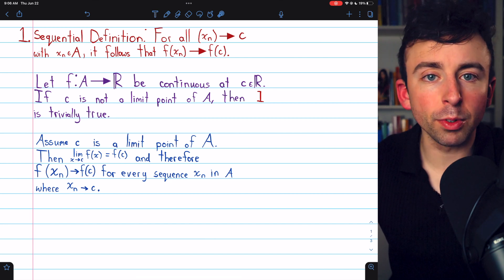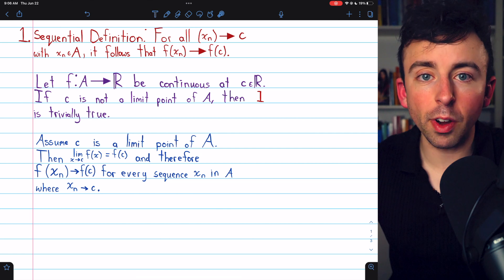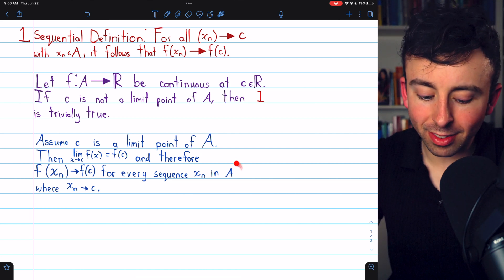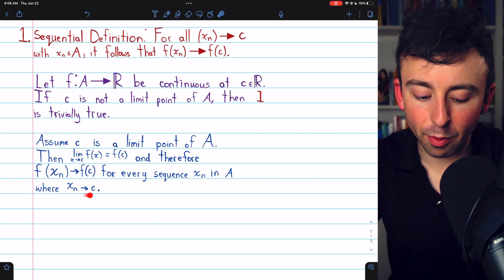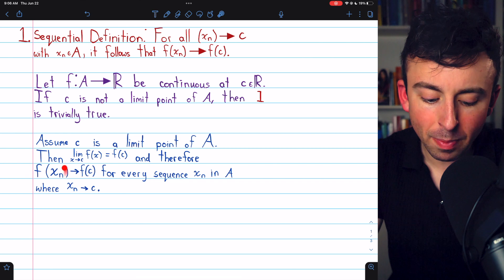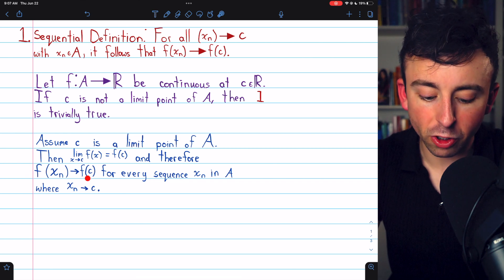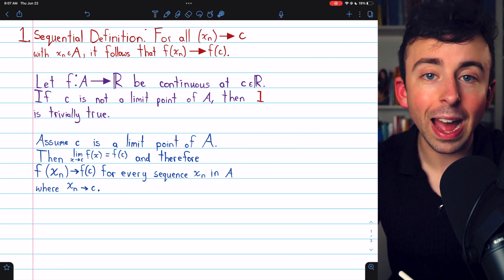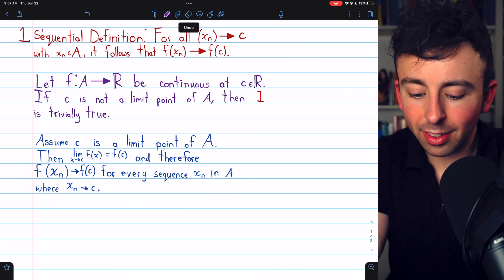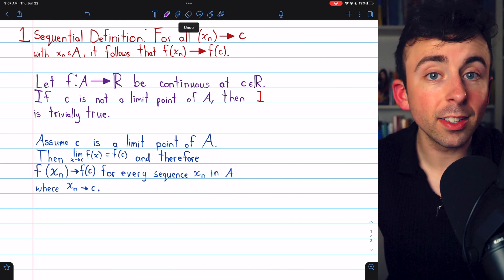But then, by our previous result connecting sequence limits and function limits, again, link in the description to that video, for every sequence in the domain that converges to that limit point c, the sequence of images must converge to the function's value at that limit point c. And that conclusion is precisely property 1 that we wanted to prove.